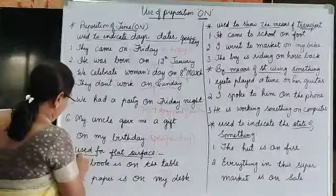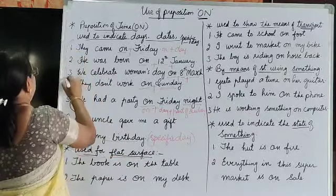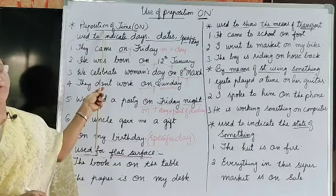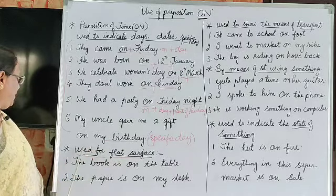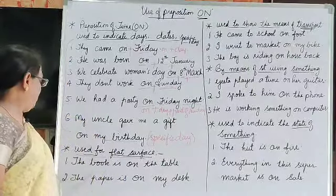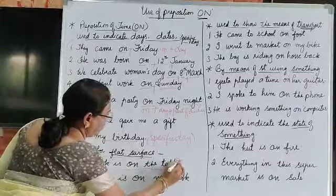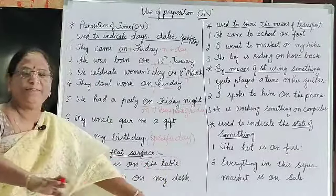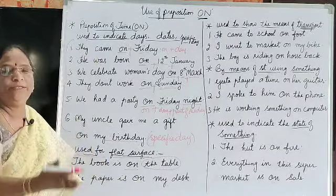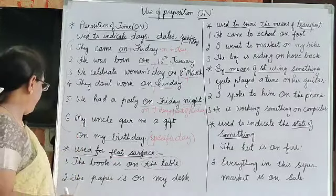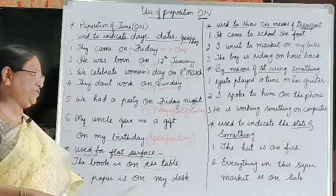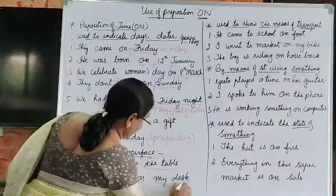Next, 'on' is used for a flat surface. For example: the book is on the table — on the bench, on the court, on the terrace. The paper is on my desk. All flat surfaces take 'on'.